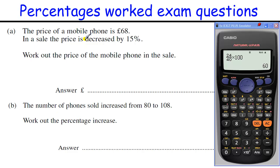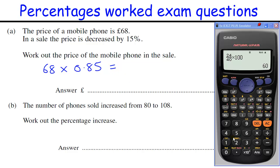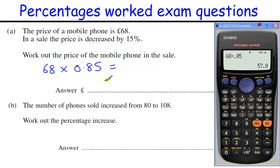Price of mobile phones: in the sale, price decreased by 15%. You could work out 10% and 5% and take them both off. It's much quicker to just figure out that if you're decreasing by 15%, you're actually working out 85%. And when you're working out 85%, you just times it by 0.85, which gives £57.80.